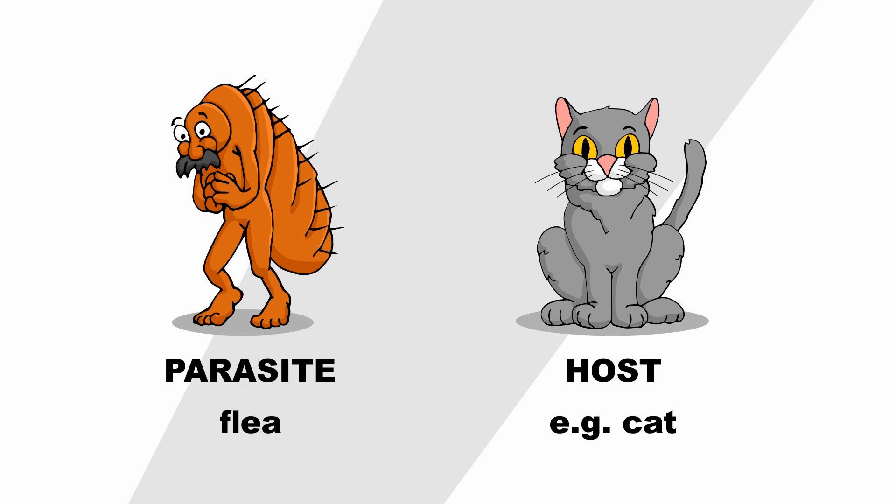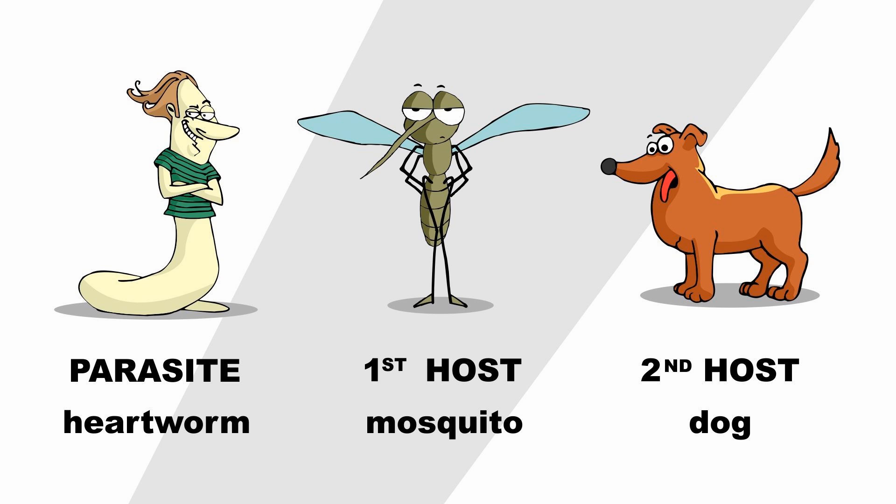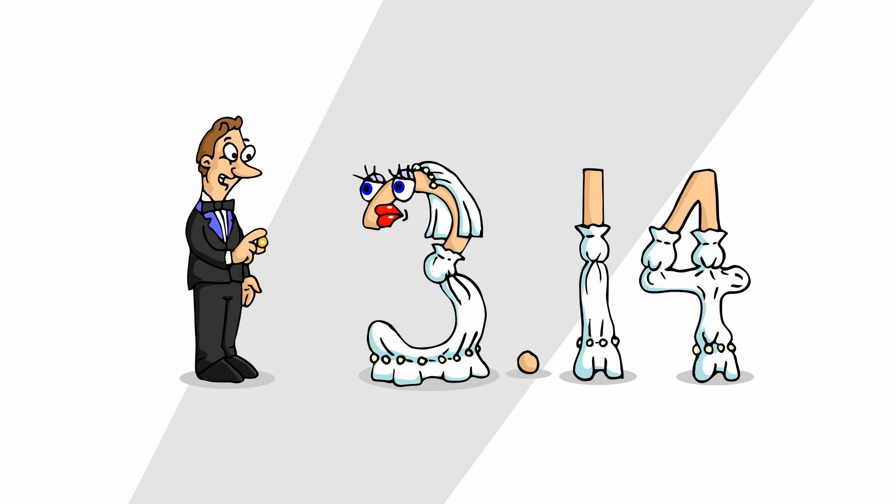A flea, for example, has only one kind of host. So does the haunted house. The hot worm has two. You could call them first and second, but who's fond of cold numbers? Apart from mathematicians.